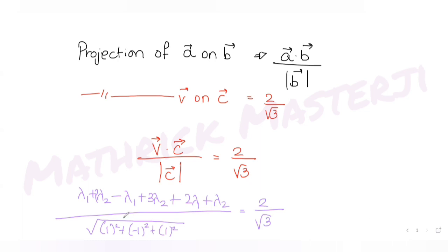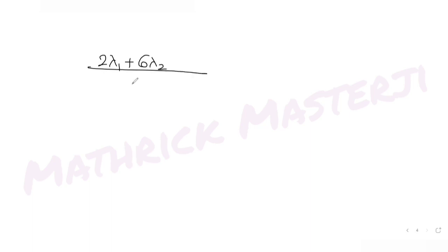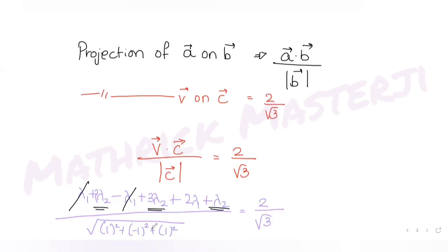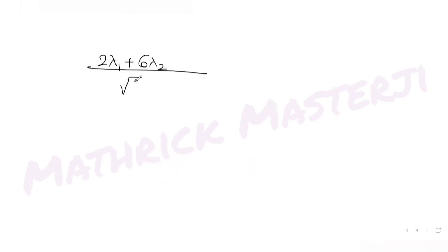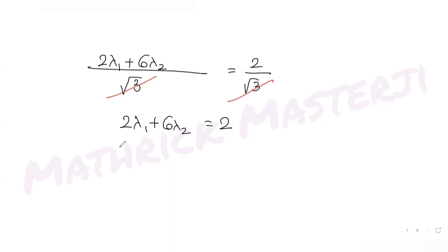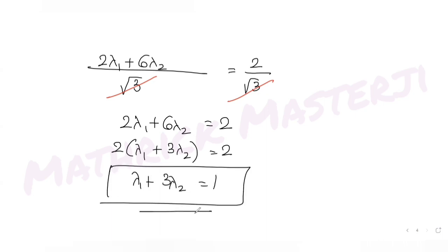Simplifying the numerator: λ₁ - λ₁ = 0, leaving 2λ₁, and 2λ₂ + 3λ₂ + λ₂ = 6λ₂. So (2λ₁ + 6λ₂)/√3 = 2/√3. The √3 cancels, giving 2λ₁ + 6λ₂ = 2, or λ₁ + 3λ₂ = 1. This is Equation 1.